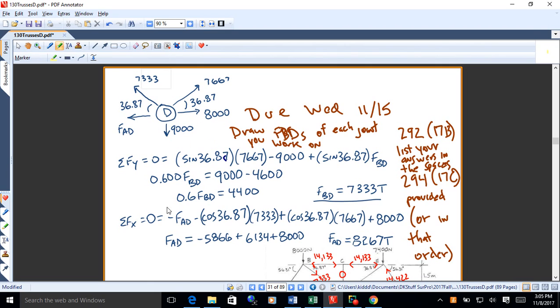So what we get then is minus FAD right there to the left. So that's minus. And then we get minus cosine 36.87 times 7333. Then plus cosine 36.87 times 7667 plus 8,000. And the sum all for those is 0. And you can solve for FAD. And that comes out to be 8267. So that is also as assumed. The positive answer means the direction is as we assume. And it's to the left. So FAD is 8267 tension.